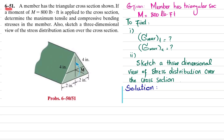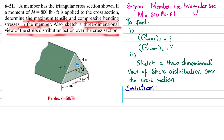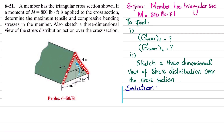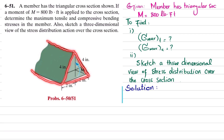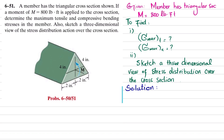Welcome back, problem 6-51. The statement is: a member has a triangular cross section. If a moment of 800 pound-feet is applied to the cross section, determine the maximum tensile and compressive bending stresses in the member. Also sketch a three-dimensional view of stress distribution over the cross section. This is a triangular cross-section beam acted upon by moment M = 800 lb·ft. Due to this moment, there will be compression in the upper portion and tension in the lower portion.